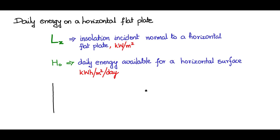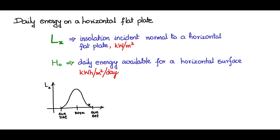Let us draw an x and y axis. The x-axis is the time of the day — at noon, sunrise somewhere here, and sunset further along. The y-axis is Lz in kilowatt per meter square, the insolation. If you draw the curve it will look something like this, which we have seen earlier, and the area under this curve is the integration of the Lz curve with respect to the time of the day, or what we would call the hour angle omega.